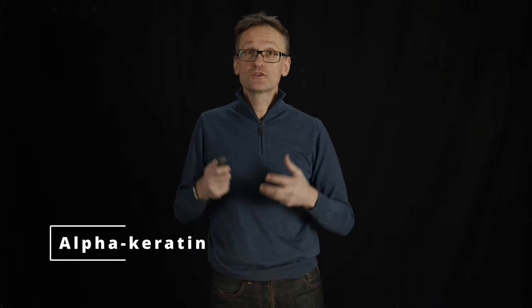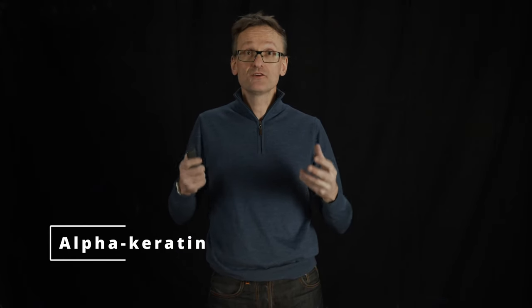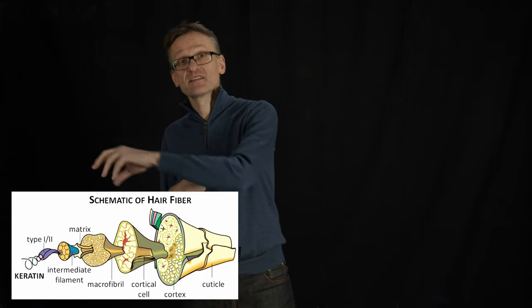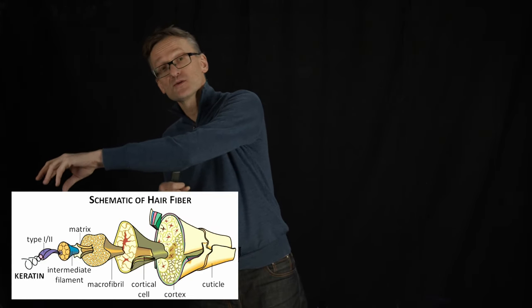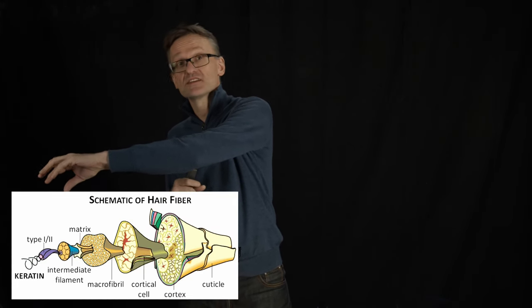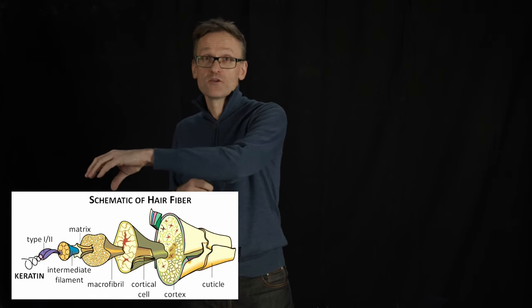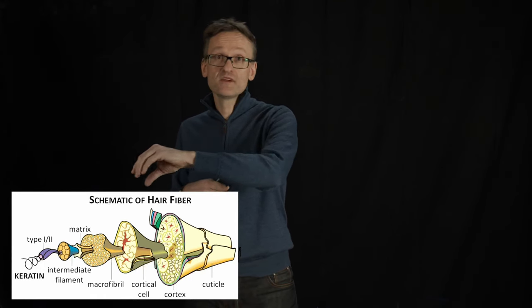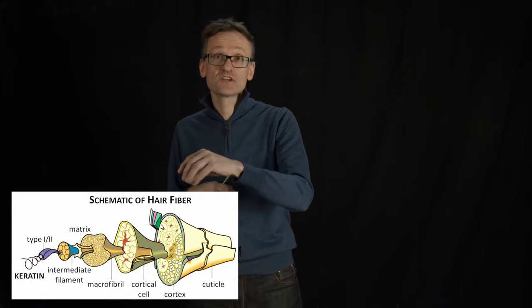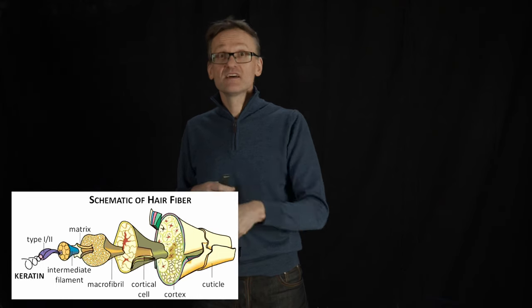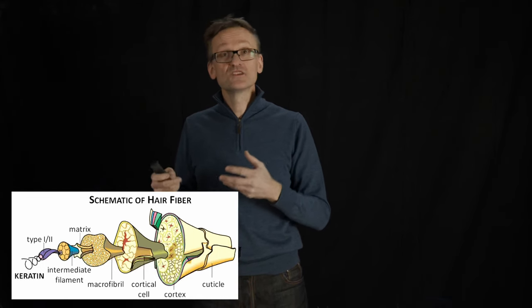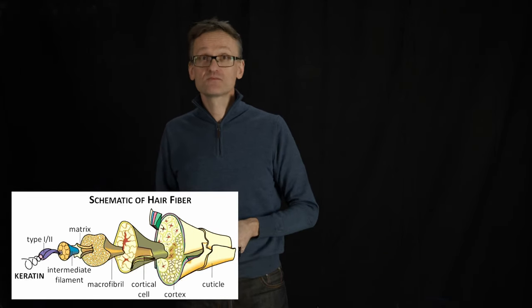So if you repeat those units two by two by two, you will form larger and larger structures. And these structures will look something like this. You're going to start from something that's the size of a few angstroms or so. You will go up to nanometers, micrometers, and eventually submillimeters. And this is the structure of hair fibers.